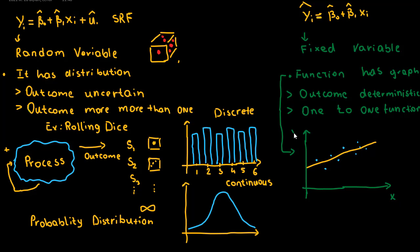Here we can make the graph: this is x on one axis and ŷ on the other, with values x₁, x₂, x₃. The line is ŷ = β̂₀ + β̂₁x_i. We can see that for one value of x — say x₂ — we obtain exactly one value of ŷ₂. That is a one-to-one function. That's all for today, thanks for watching.